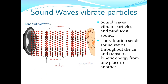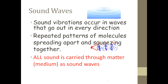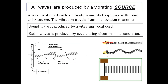Sound waves vibrate particles and produce a sound. The vibration sends sound waves throughout the air and transfers kinetic energy from one place to another. Sound vibrations occur in waves that go out in every direction — repeated patterns of molecules spreading apart and squeezing together. All sound is carried through matter as sound waves. All waves are produced by a vibrating source; a wave is started with a vibration and its frequency is the same as its source.